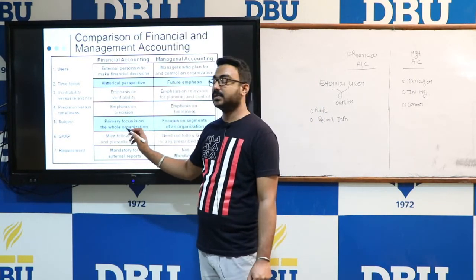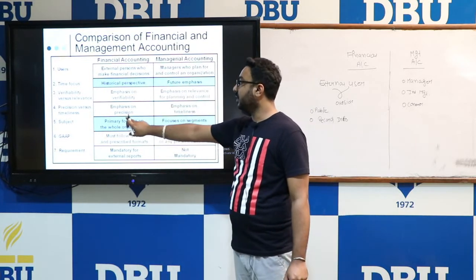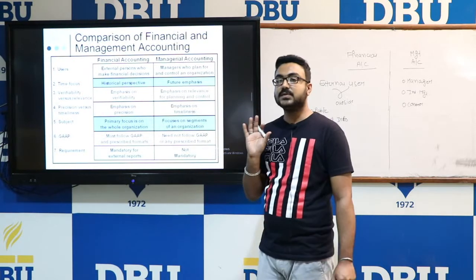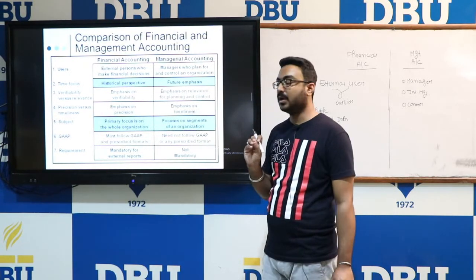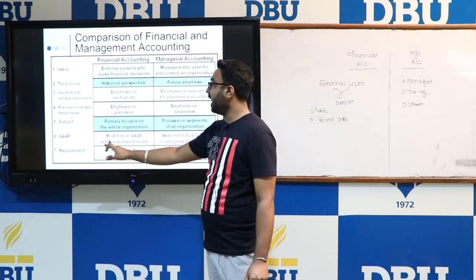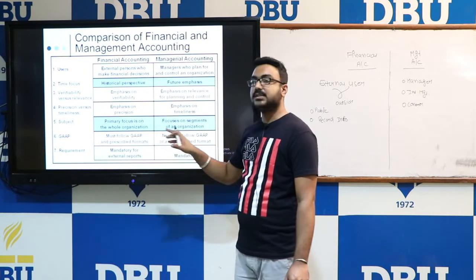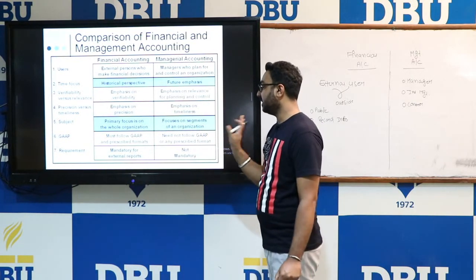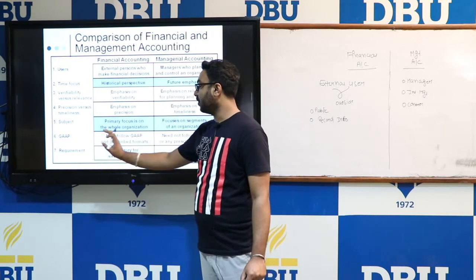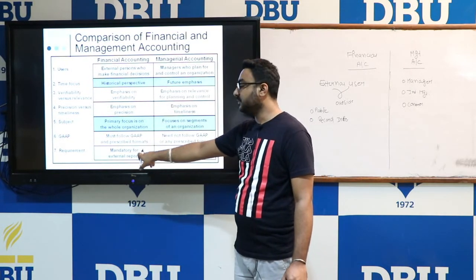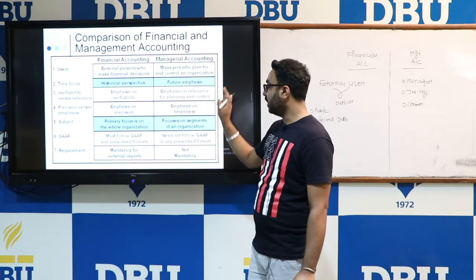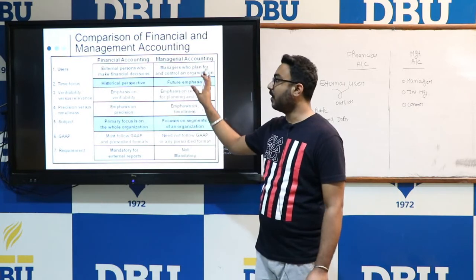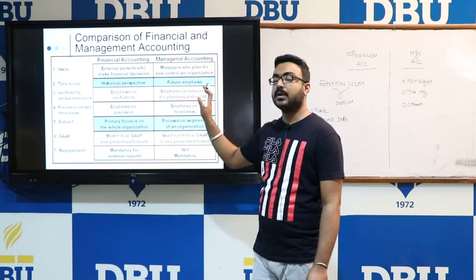The next difference is subject — financial accounting focuses on the whole organization, while management accounting focuses on segments of the organization. Under financial accounting, GAAP or accounting norms must be followed, but management accounting need not follow GAAP or any prescribed format. Finally, financial accounting is mandatory for external reporting, whereas management accounting is not mandatory from an external standpoint.